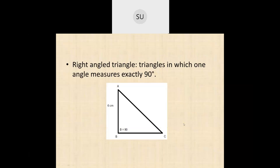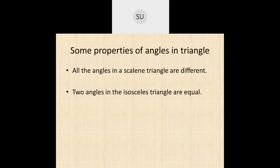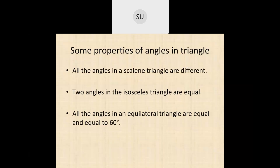Some other properties of a triangle: all angles in a scalene triangle are different, two angles in an isosceles triangle are equal, all angles in an equilateral triangle are equal and equal to 60 degrees, and all the angles in any triangle add up to 180 degrees. That's what we studied about triangles. Today we will study circles, so let's move on.